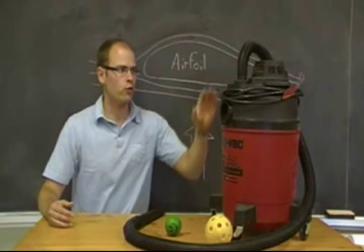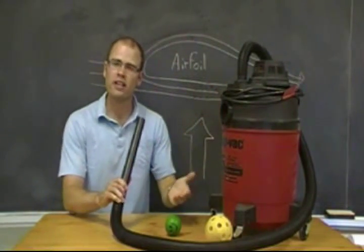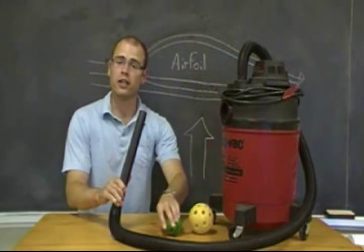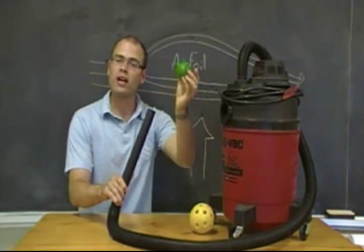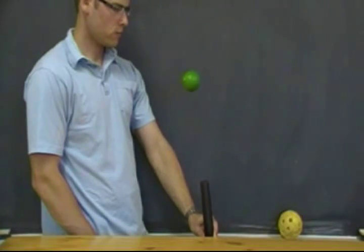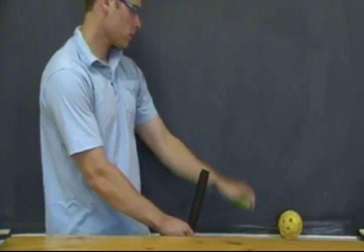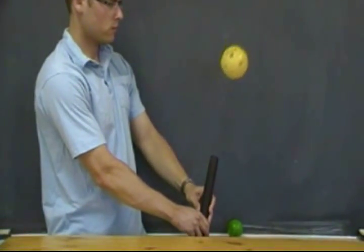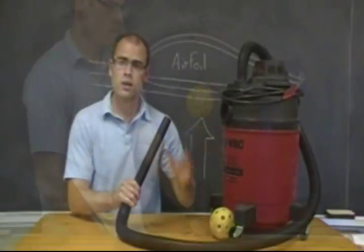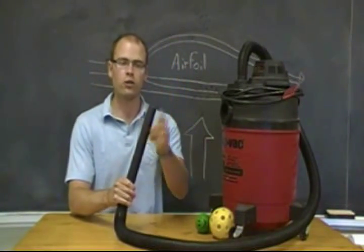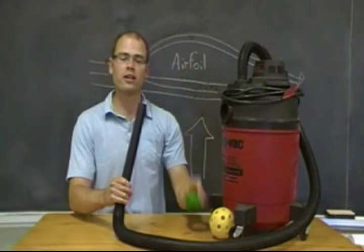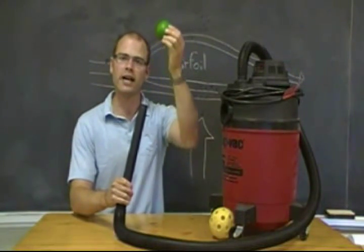An impressive way to demonstrate Bernoulli's principle uses the blower function on a shop vac — a more powerful vacuum works better. Use a few different types of balls and make them float outside the nozzle. Ask students what's happening and how Bernoulli's principle is at work. The ball floats because the fast-moving air from the nozzle creates an area of low pressure, while the still high-pressure air surrounding it keeps the ball pegged in the middle so it can't go anywhere.